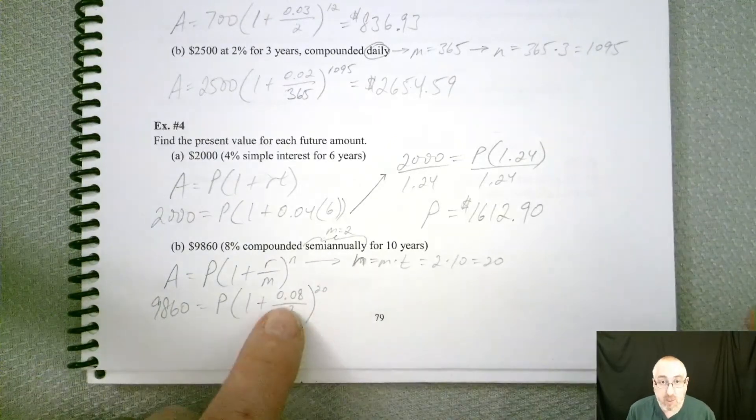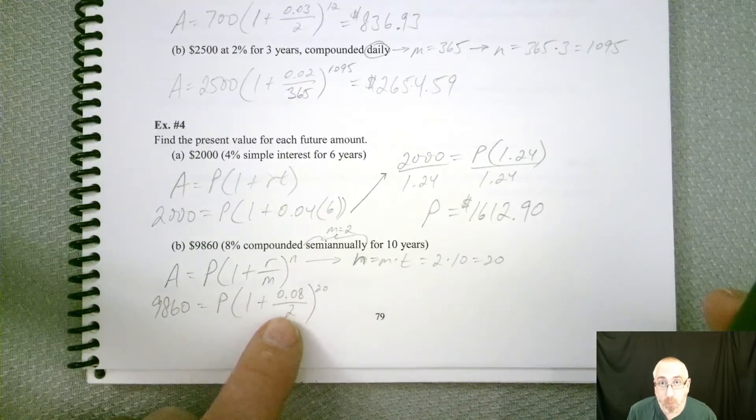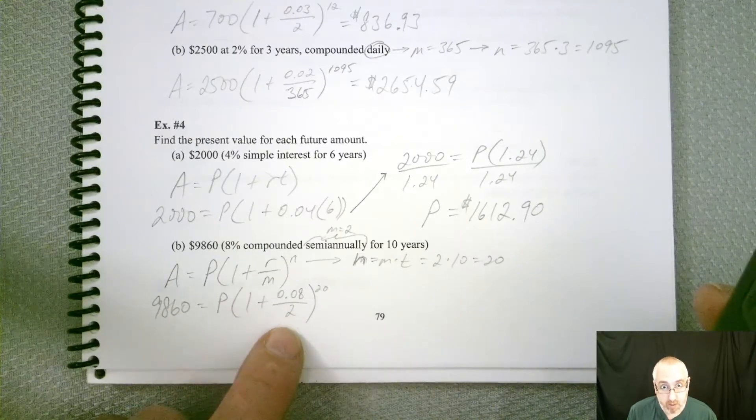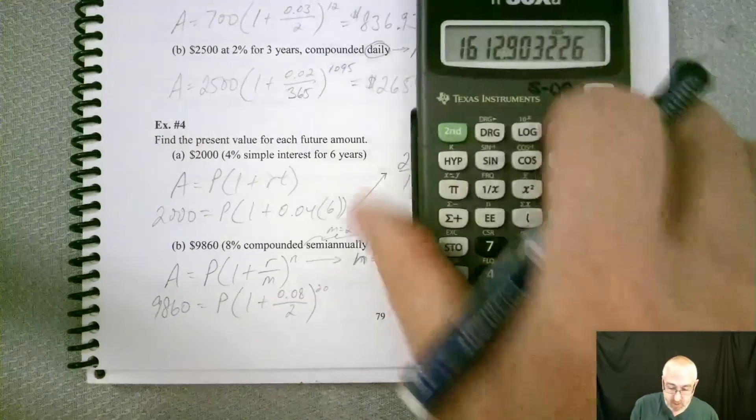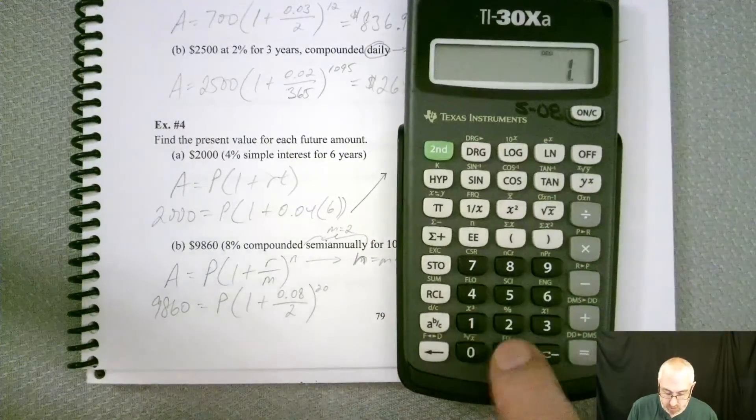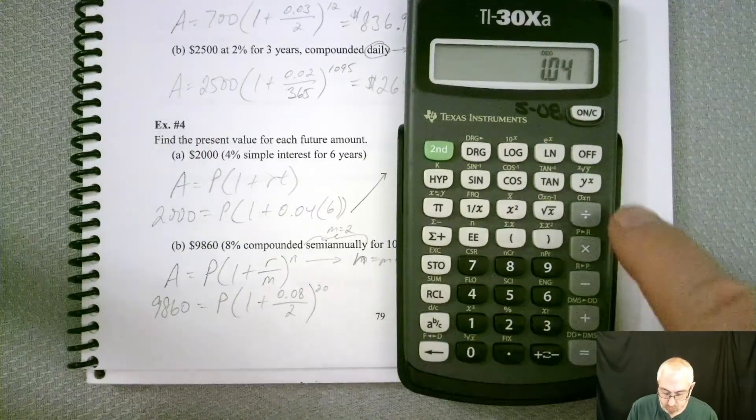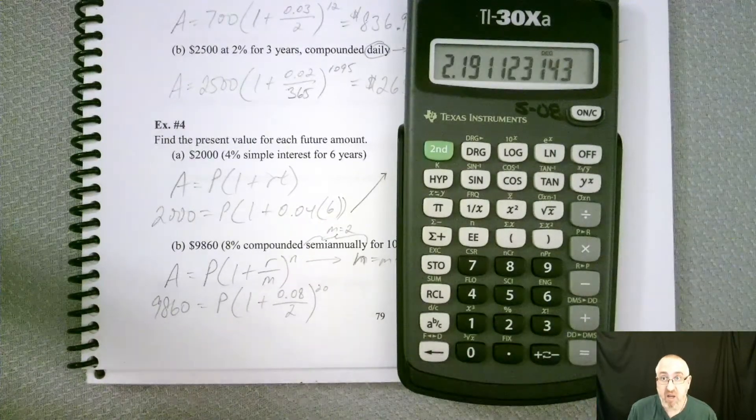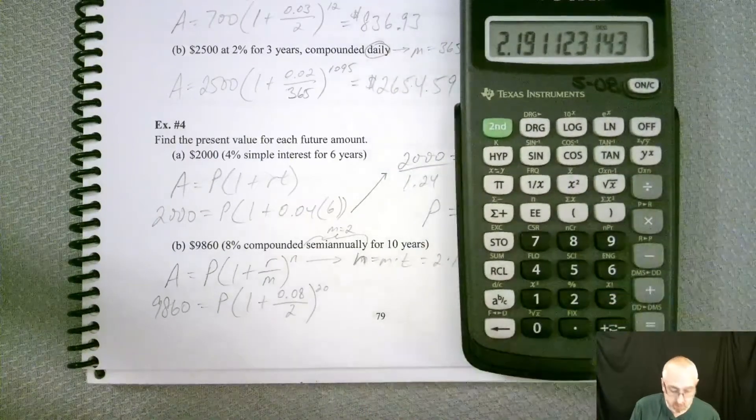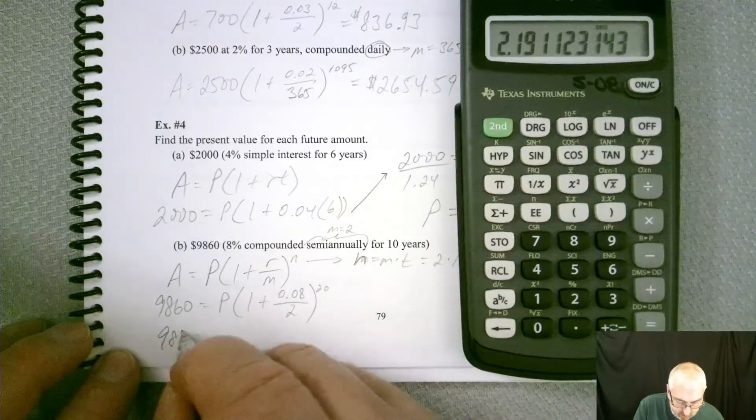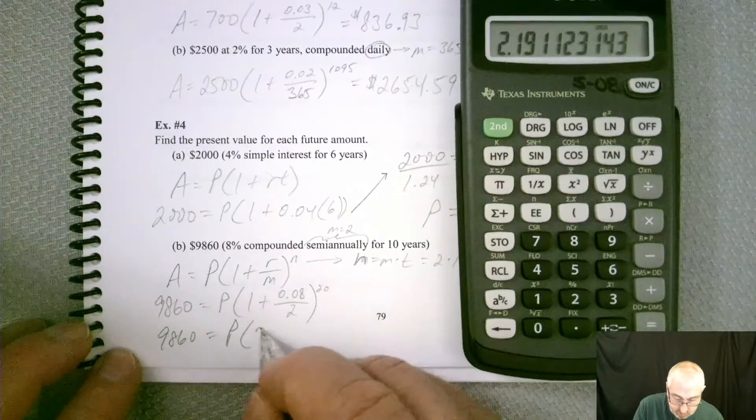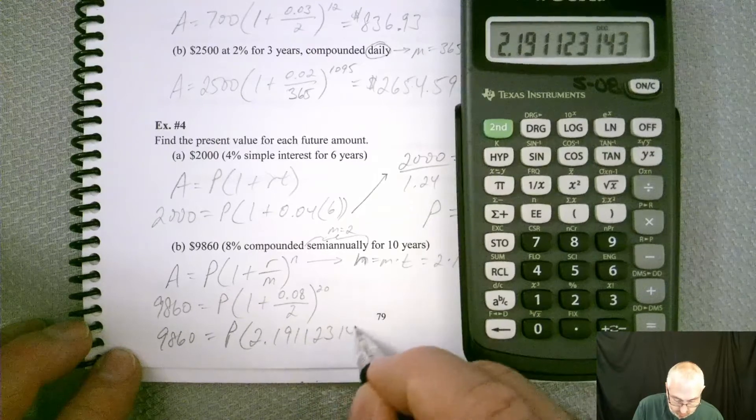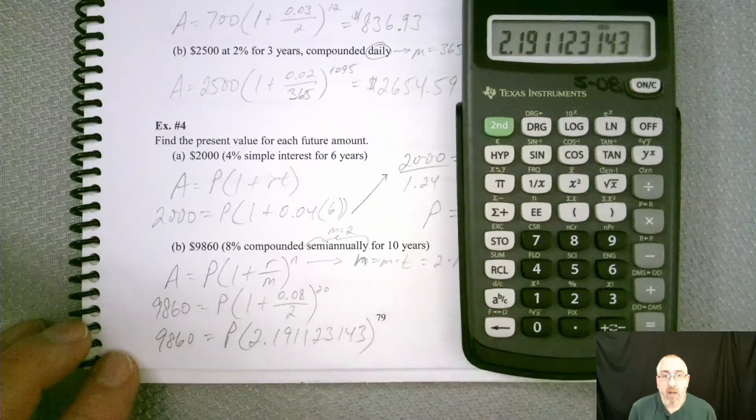Well, 0.08 divided by 2 should be 0.04. So 1 plus that would be 1.04 raised to the 20th. So let's see what that equals. 1.04 raised to the 20th equals a yucky decimal. So we get 9,820 equals P times 2.191123143.